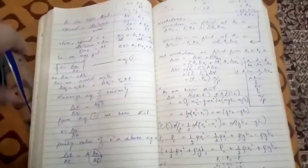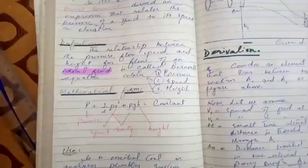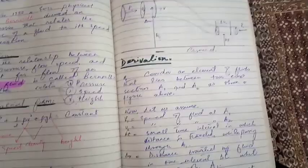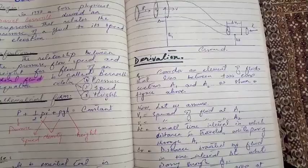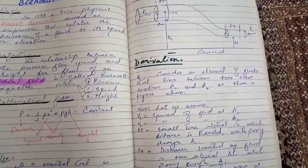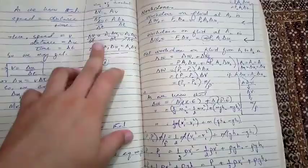To summarize the full answer structure for Bernoulli's equation: first state its origin (Daniel Bernoulli, 1738), then define it, write its mathematical form, list its applications, draw the figure, and then derive the equation. Keep it compact — once you know the key concepts you can skip intermediate steps. If you have any questions, please ask. Thank you, have a great day.